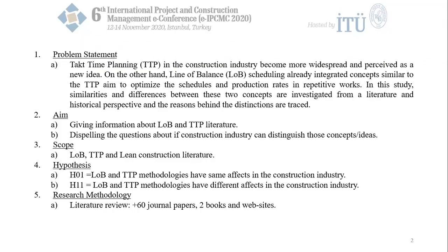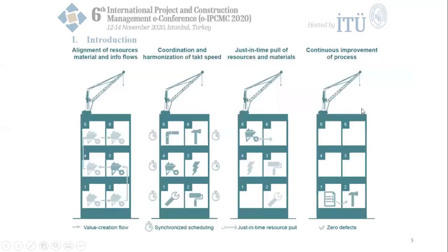Takt time planning in the construction industry has become more widespread and perceived as a new idea. On the other hand, line of balance scheduling has already integrated concepts similar to takt time planning, aiming to optimize the schedules and production rates in repetitive works. In the study, similarities and differences between these two concepts are investigated from a literature and historical perspective, and the reasons behind the distinctions are traced.